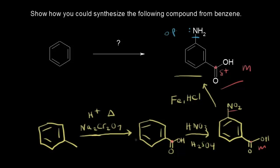You could have also done this reaction with permanganate and heat as well. You could have chosen any number of carbons on your alkyl side chain — I just chose one to make it easy. This carbon, when the group gets oxidized, would turn into that carboxylic acid carbon. Now we need to convert benzene into toluene, which we can do using a Friedel-Crafts alkylation reaction. We need one carbon, so for our alkyl chloride we would need CH3Cl, with aluminum chloride as catalyst.